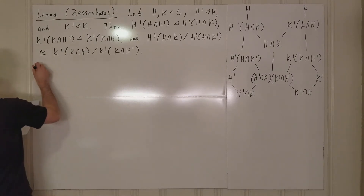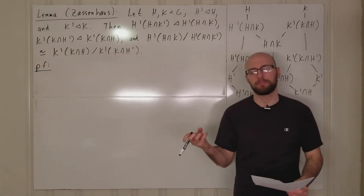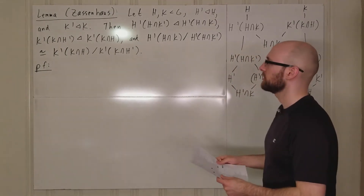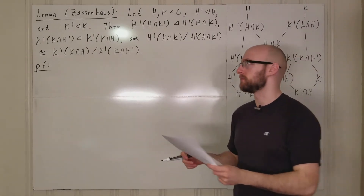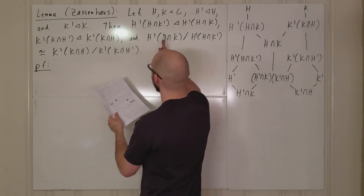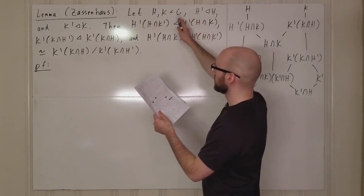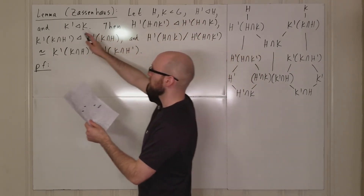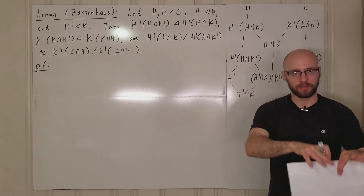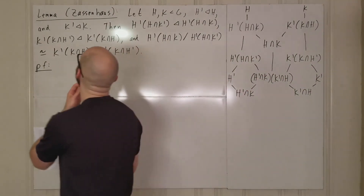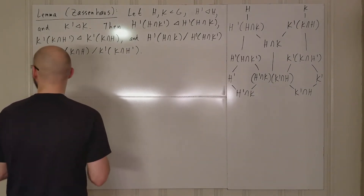Anyway, let's prove this. I mentioned in the last video that this was the missing step in the proof of the Schreier Refinement Theorem. It turns out what you need is: if you let h be H_i, h prime be H_{i+1}, k be K_j, and k prime be K_{j+1}, and plug those into what we did in the last video, it gives you exactly what we were looking for. I'll leave that to you to figure out.